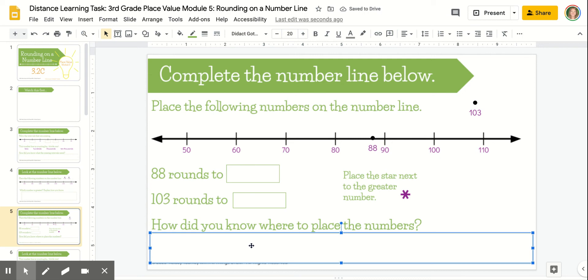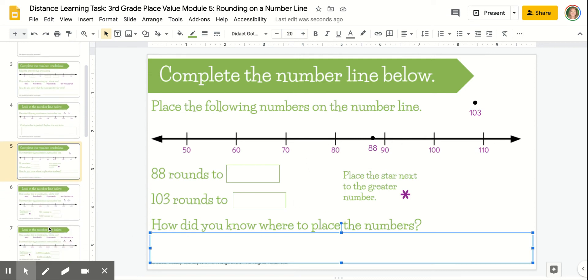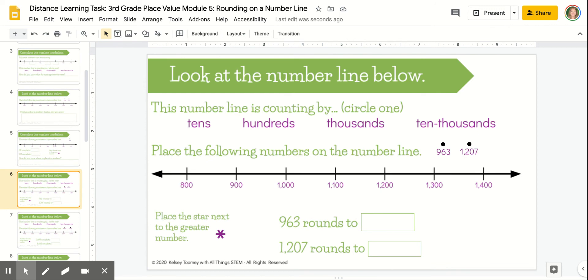Next, you're going to reflect on how you knew where to place the numbers on the number line. You'll repeat that process for a few examples. Sometimes you'll need to circle what the number line is counting by using your scribble tool.